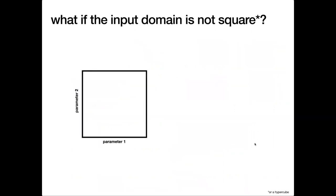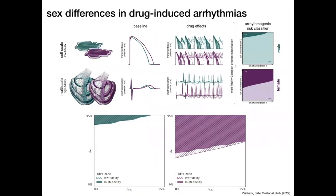A question came up asking what makes one model female and the other male. There are multiple differences: the female heart is smaller visually, and different ion channel expressions for male and female lead to different cellular models. We also change the conductivity of the tissue to adjust for different conduction velocities in male and female.